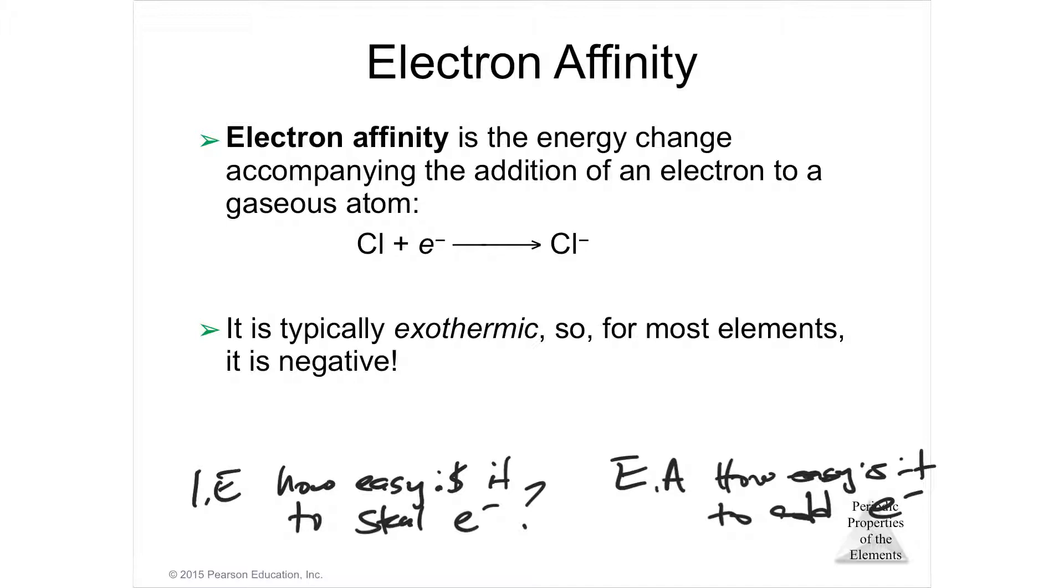If I add an electron and I get a lot of energy back, then it's very easy to do that because that's going to happen spontaneously. If I have to add energy to crowd an electron on, then that's not going to happen automatically because where's the energy going to come from? But if you can steal an electron and get energy back from that, then that's most likely going to happen.